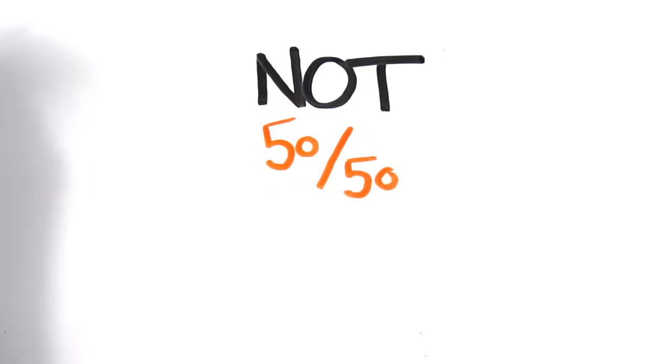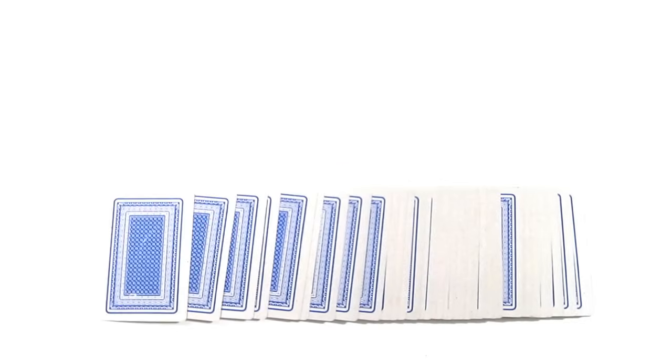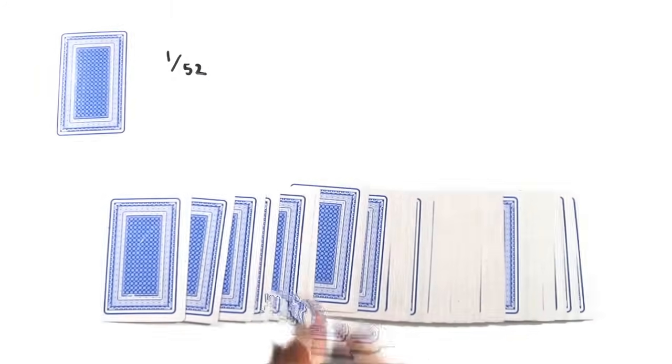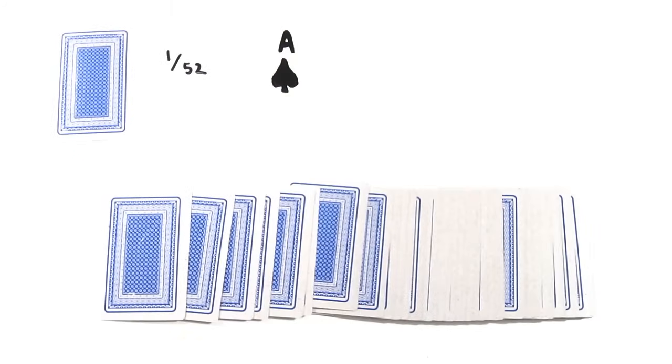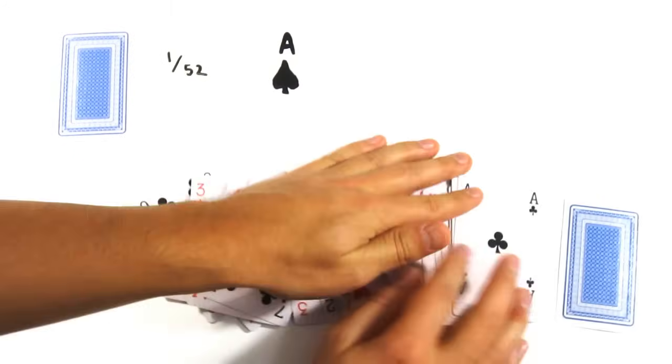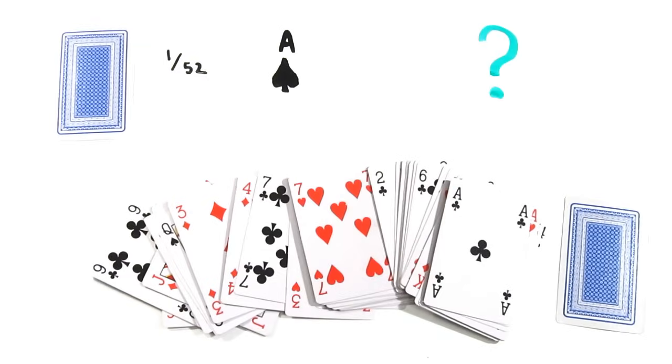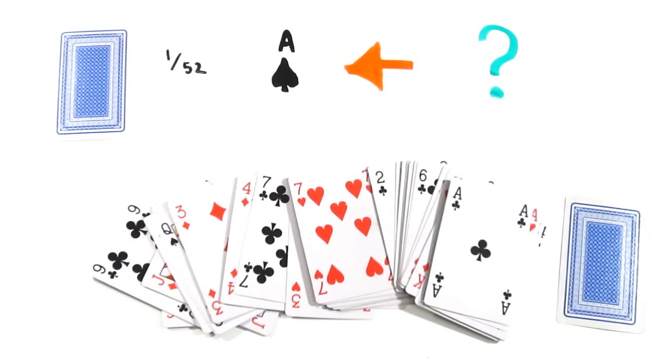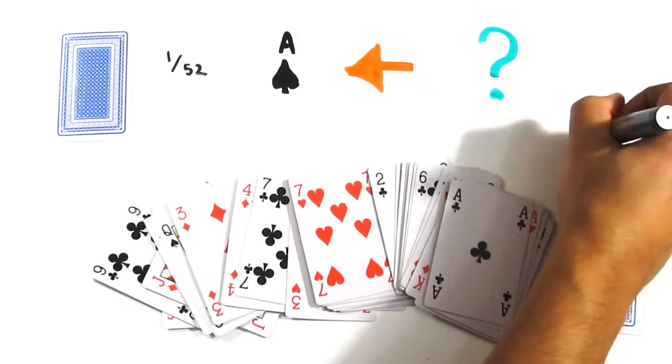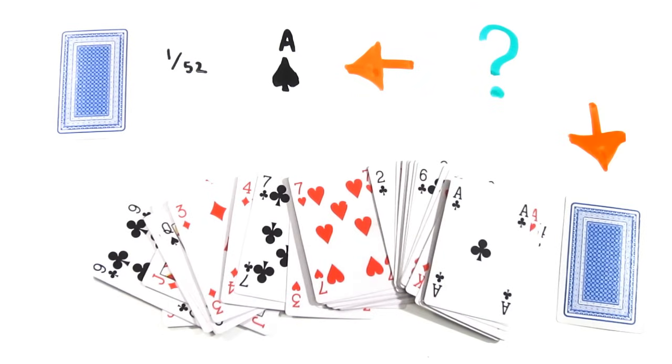Let's use a deck of cards to understand why. Pick a card from this deck without looking. This card has a 1 in 52 chance of being the Ace of Spades. But now, I'm going to flip over all the other cards except one, none of which are the Ace of Spades. Of the two cards left, which one seems more likely to be the Ace of Spades? The one you chose randomly out of a deck of 52, or the one I purposefully and suspiciously left turned down?